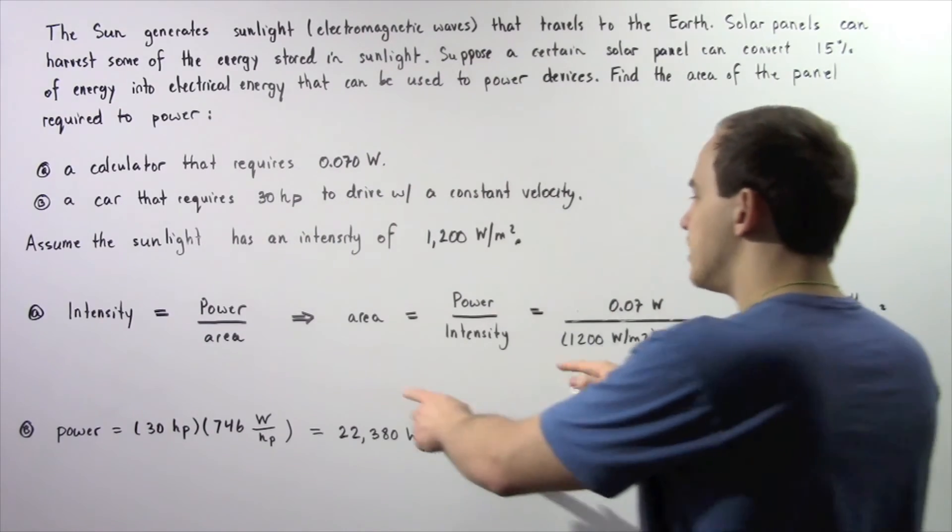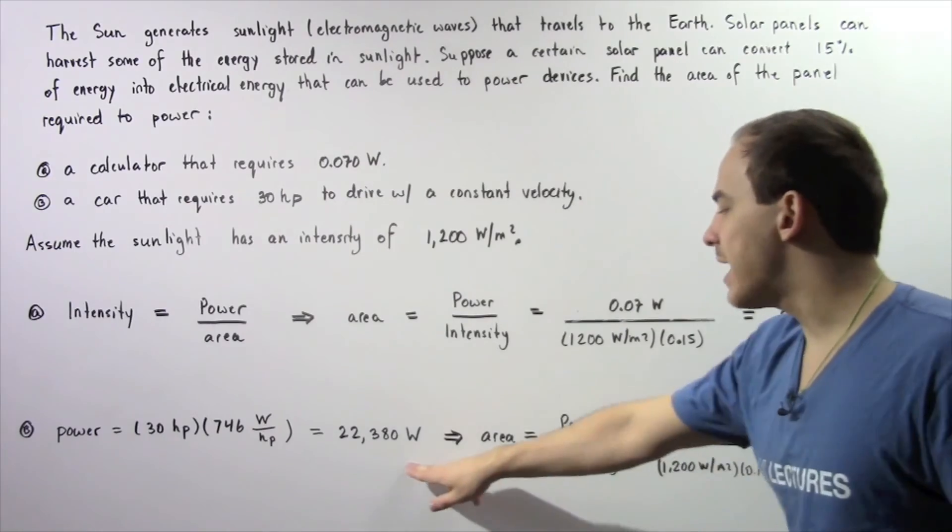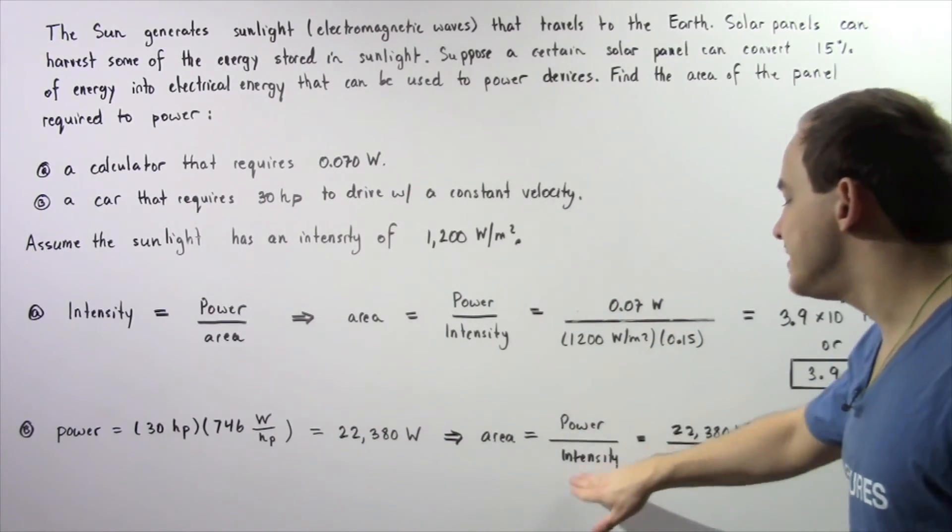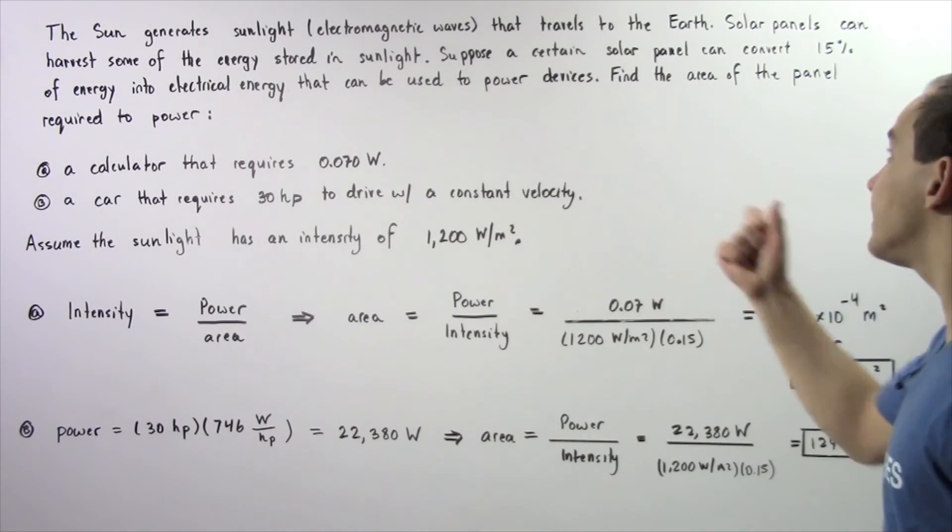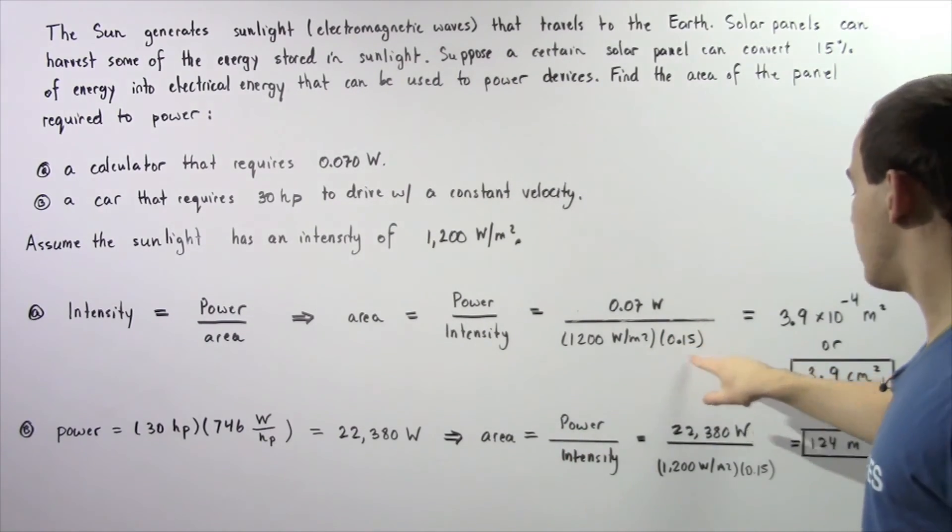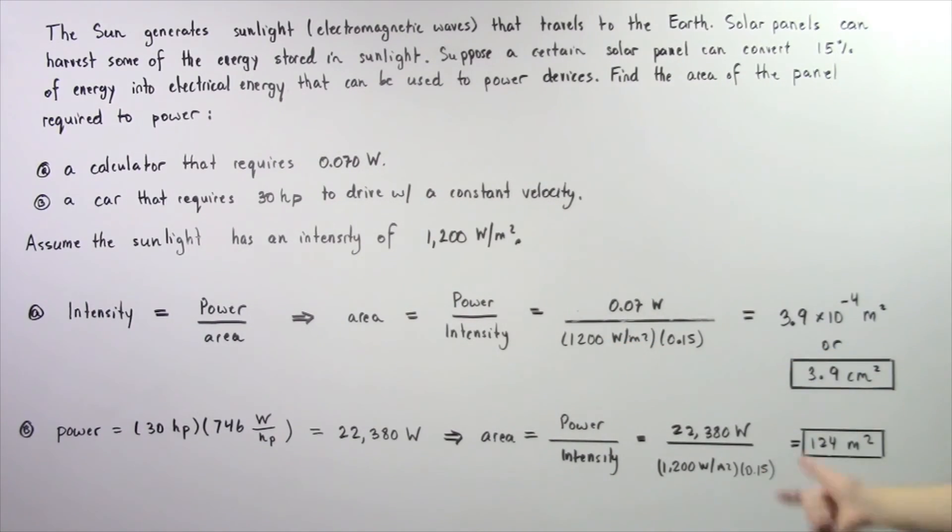Now we take this equation. The area is equal to the power required by the car, so this quantity divided by the intensity captured by the solar panel. So 15% or 0.15 multiplied by 1,200 watts per meter squared. That gives us about 124 meters squared.